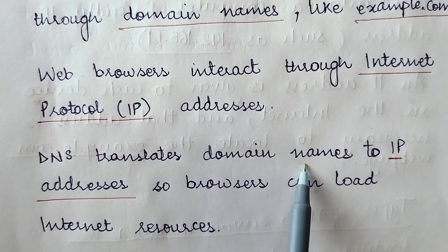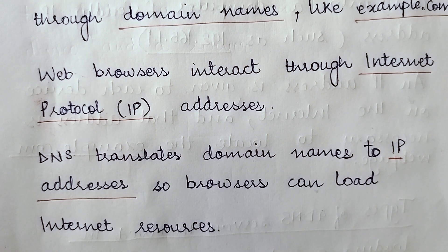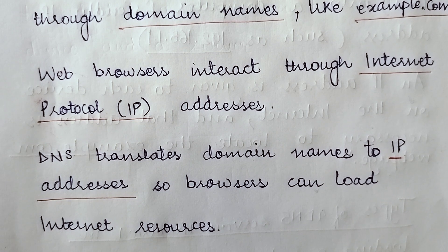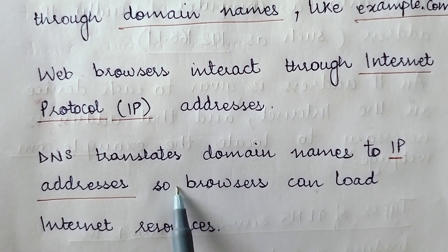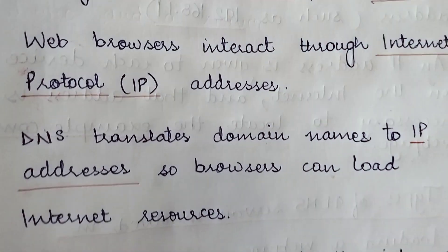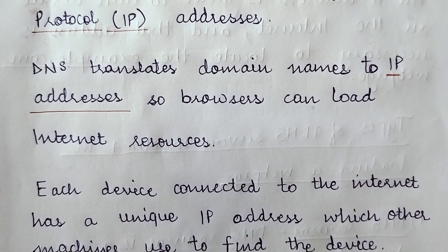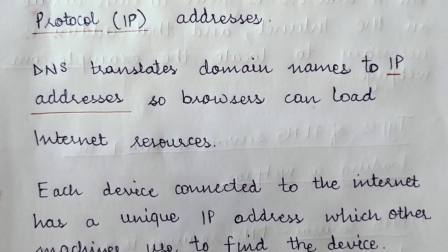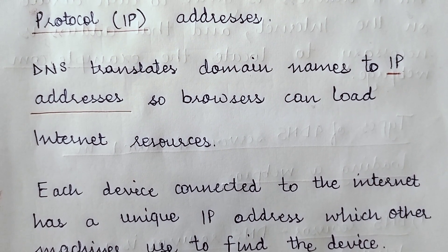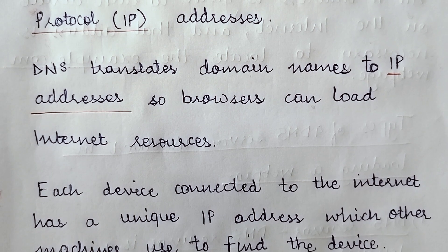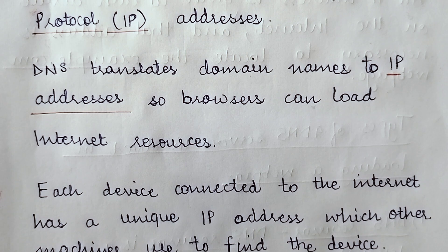DNS does the task of translating domain names to IP addresses so that browsers can load internet resources. You are calling a website through a particular name, but the browser does not identify that name. So the DNS first translates that domain name into its respective IP address so that the browser can load that particular website you are demanding for. Every time you type www.example.com, the DNS converts it to a respective IP address and then the web browser identifies it and sends the request to access that website.